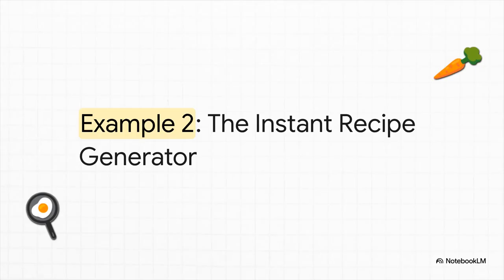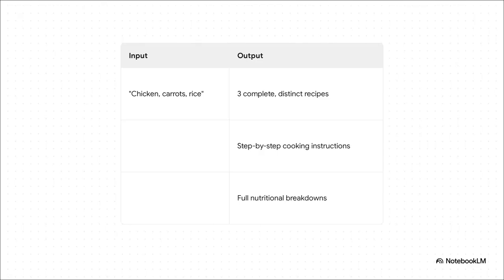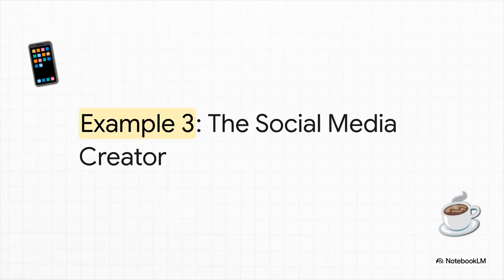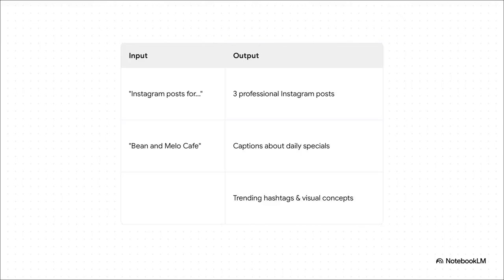Let's try another one to show how versatile this is — an instant recipe generator. The input is just what you have in the fridge: chicken, carrots, and rice. In return, Opal doesn't just give you one lazy idea. It generates three totally different recipes, complete with cooking instructions and even nutritional info. This is a genuinely useful tool you could build in minutes. For the last example, here's one with a direct business use — a social media creator for small business owners. You feed it a simple prompt, like 'Instagram posts for Bean and Mellow Cafe,' and you get back three professional posts: captions about daily specials, trending hashtags, even ideas for the visuals. It's basically automating your creative brainstorming session.